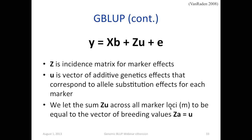This is the mixed model equation — a linear model for genomic BLUP. Nothing is different; it's the same linear mixed model. One difference is that Z in the model is the incidence matrix for marker effects, and U is the vector of allelic genetic effects corresponding to allelic substitution effects for each marker. For each marker, we get a coefficient representing the allelic substitution effect. We take the sum of all those coefficients across all marker loci and calculate the breeding values.